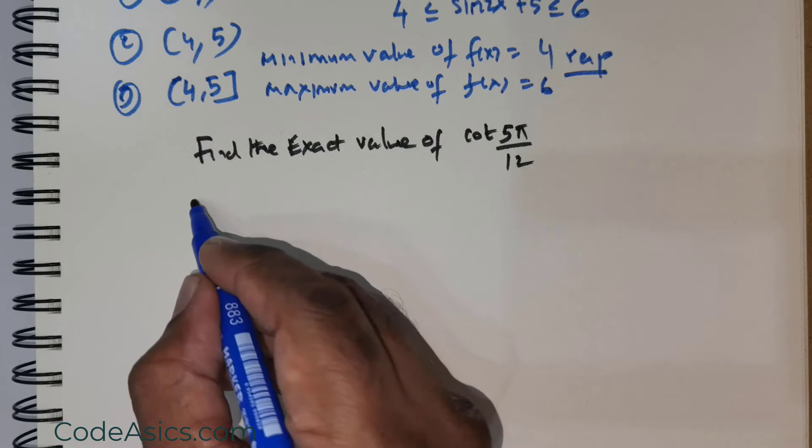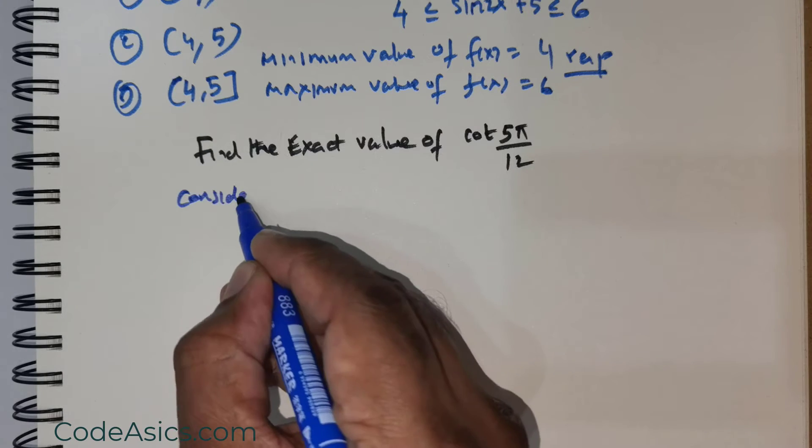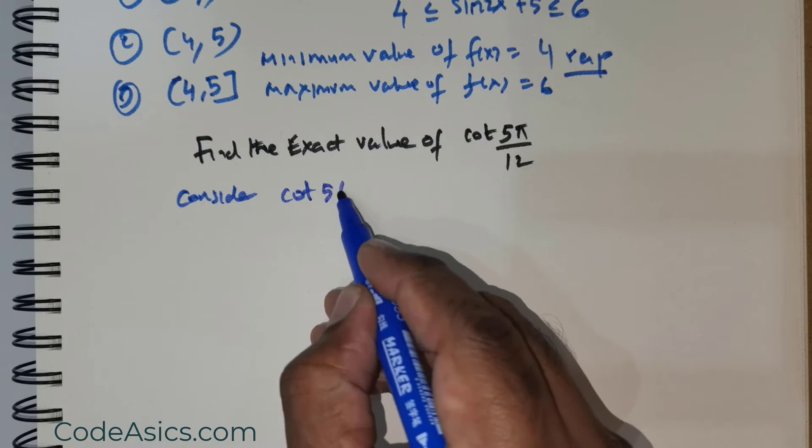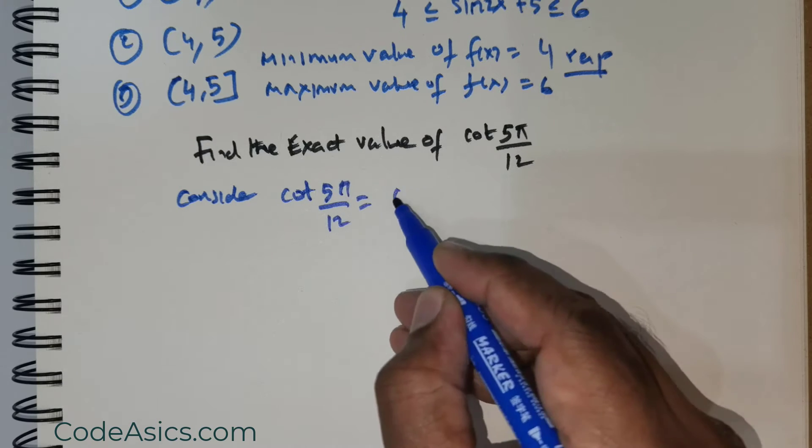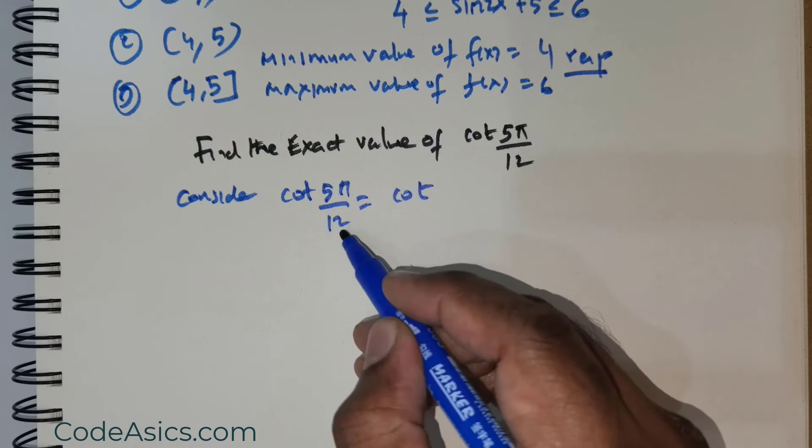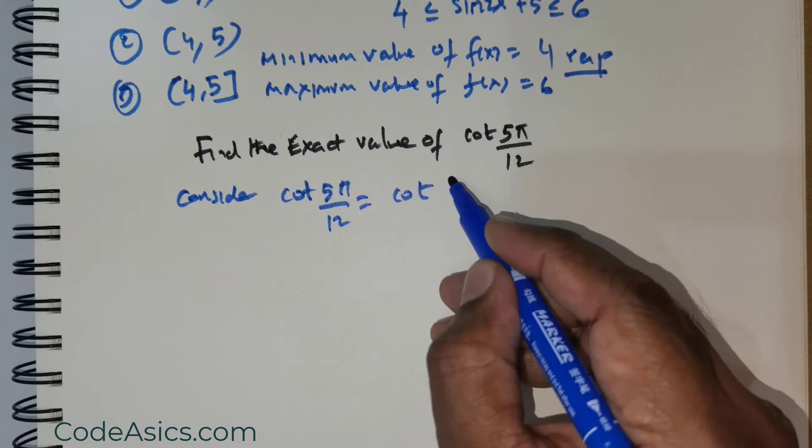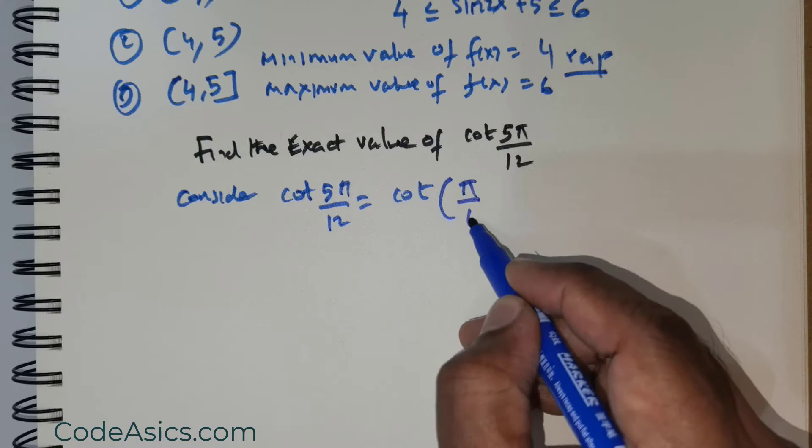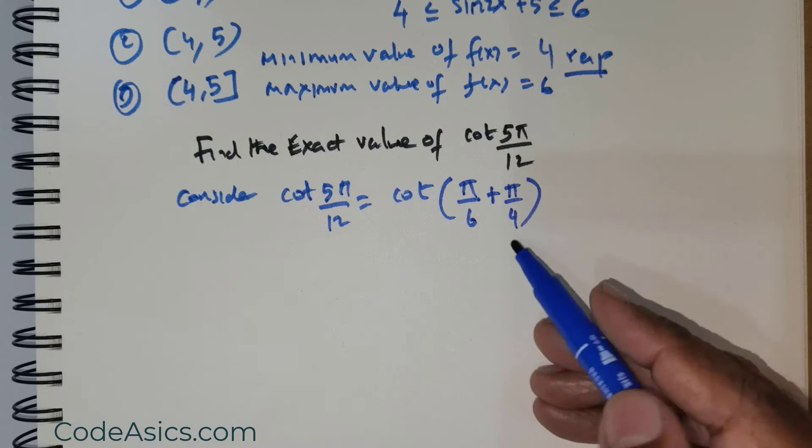Consider cot(5π/12). I would like to rewrite 5π/12 as π/6 + π/4. Now if I were to take the LCM, let me show you this.